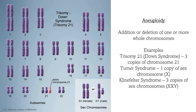Sometimes aneuploidy can occur in sex chromosomes. For example, Turner syndrome is caused by the deletion of a sex chromosome in females, so that there is only one X chromosome, whereas Klinefelter syndrome, which occurs in males, results in an additional X chromosome. Pregnant women can opt for a non-invasive test, referred to as the NIPT, in week 10 of their pregnancy to determine if the fetus has an aneuploidy disorder. The test is considered to be 99% accurate; however, it is only a screening test and not a diagnostic test, and can only determine if there is a low or high risk of an aneuploidy disorder.